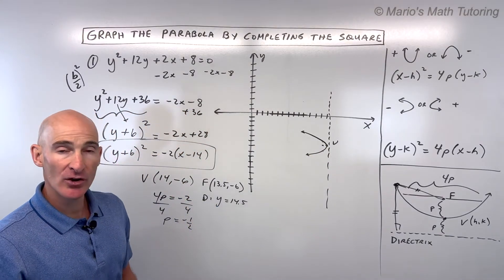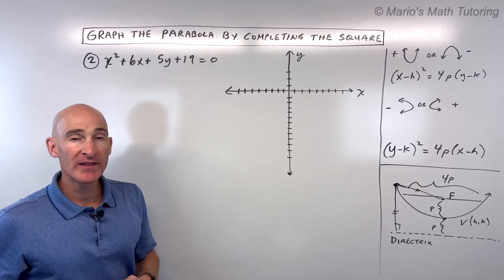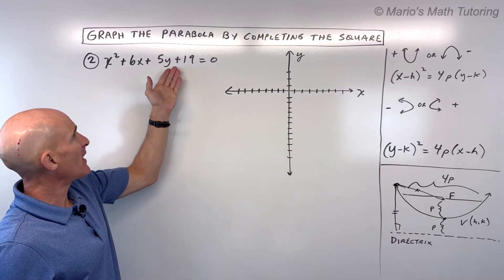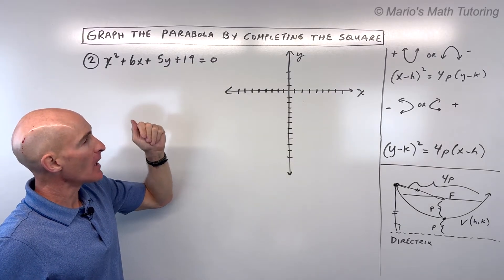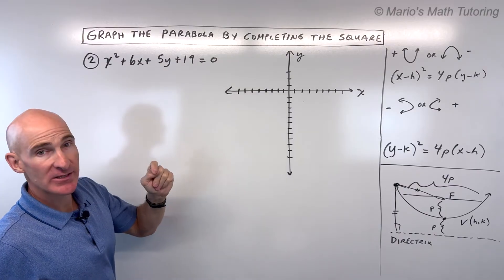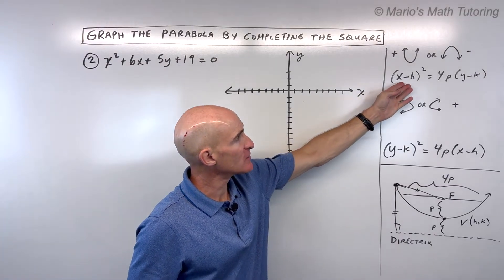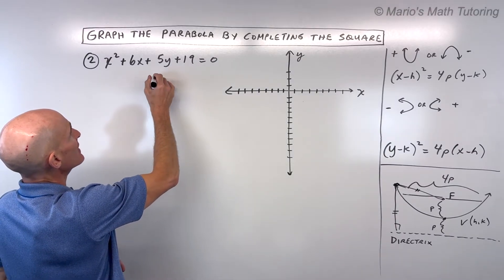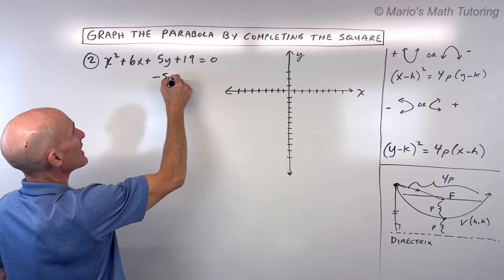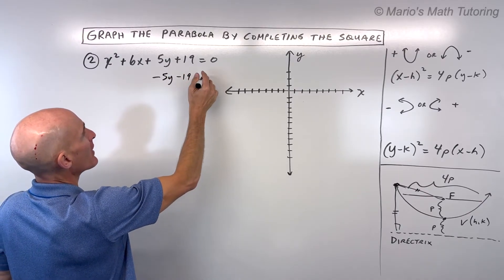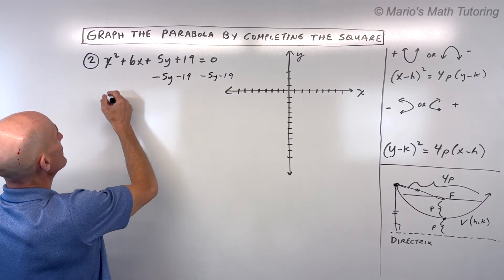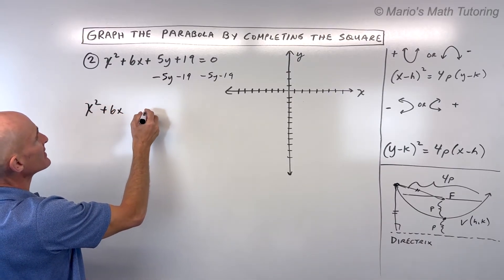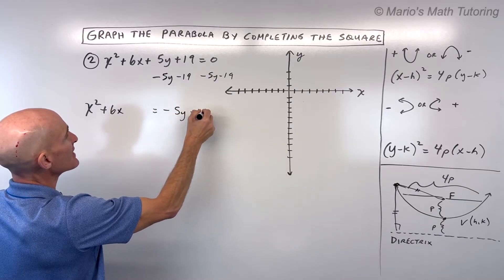Let's look at example 2. Try it on your own if you're getting the hang of this. We have x² + 6x + 5y + 19 = 0. Notice this is an x² type — there's no y². So we'll put it into the (x − h)² standard form. We move everything without an x to the other side, giving us x² + 6x = −5y − 19.